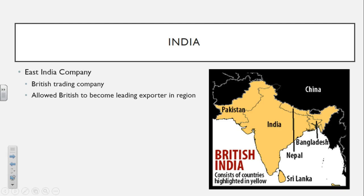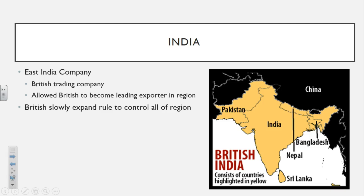They're going to control Nepal, Bangladesh, Sri Lanka, Pakistan, and India as well. The British are slowly going to take this little region they're controlling and expand that rule to control all of the regions. They're going to control everything you can see in yellow on this map at this time period.